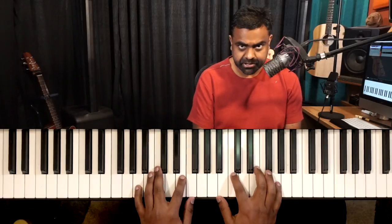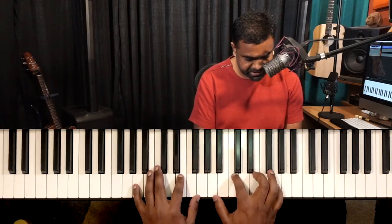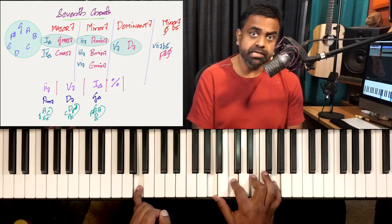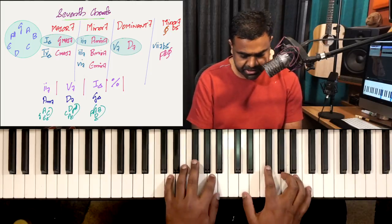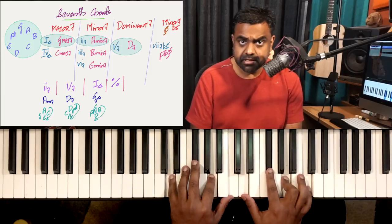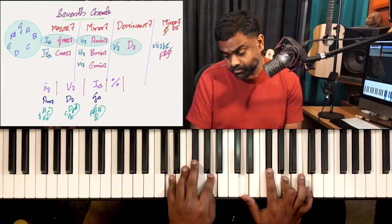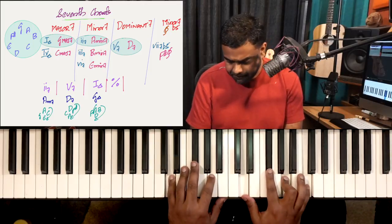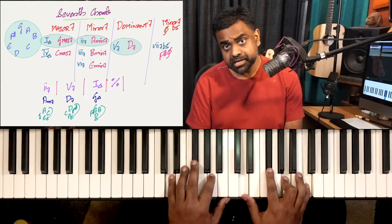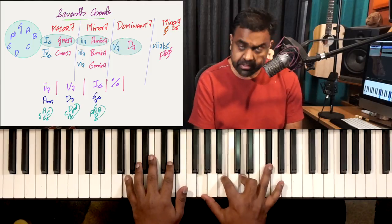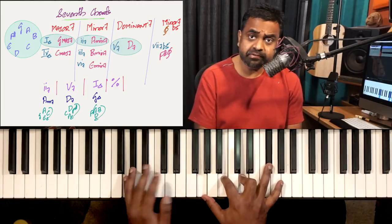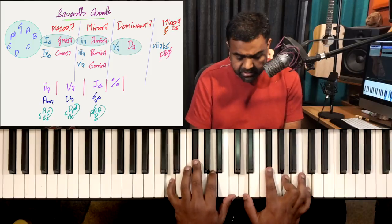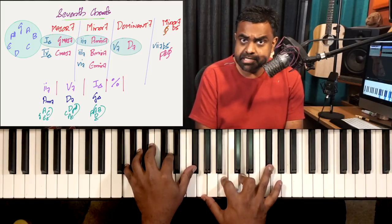So if we break down the three chords again: A minor 7th will be A, C, E, G. Then the D chord which is D dominant: D, F sharp, A with a flat 7th for a dominant chord — C. And then G major 7th: G, B, D, F sharp. So A minor 7th, D dominant, G major 7th.